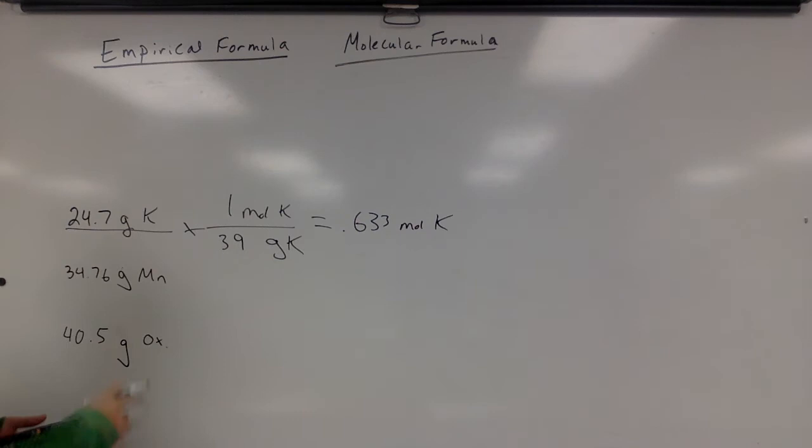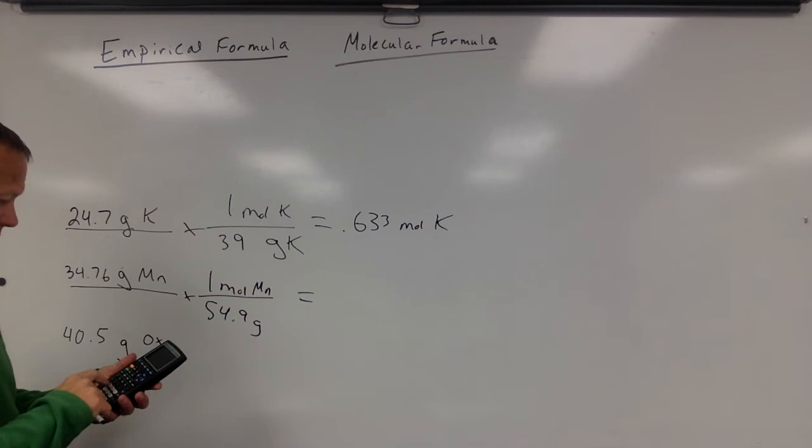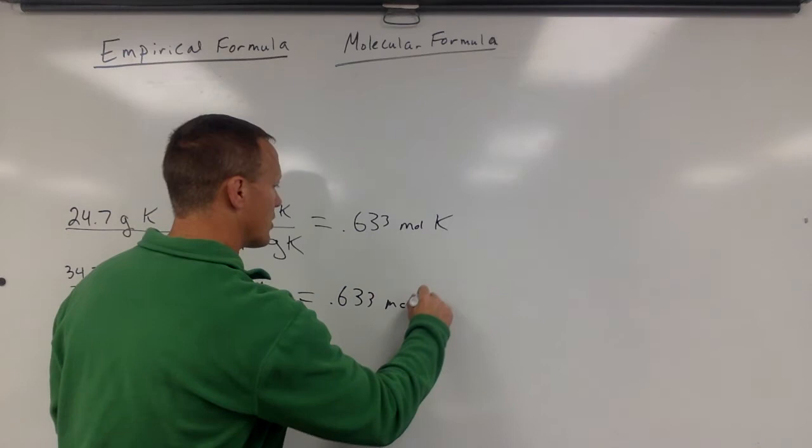Do the same thing for manganese. Manganese is 54.9 grams per mole of manganese. So I get that into moles. 34.76 divided by 54.9 is also 0.633 moles of manganese.